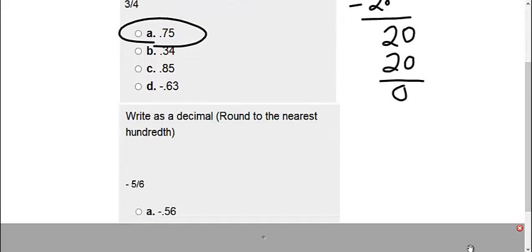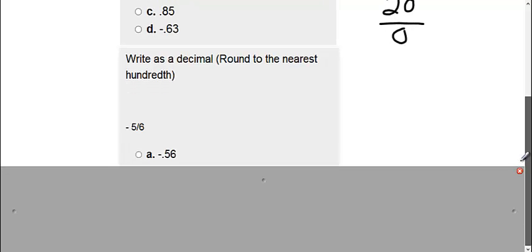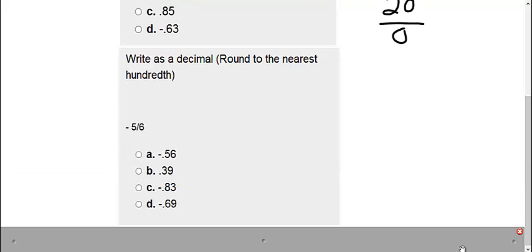Number two, here we are taking negative five sixths and we're also converting this to a decimal. So we're going to use our long division. We put the five on the inside. The six goes on the outside and we know our answer is going to be negative because it's a negative five sixths.